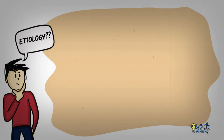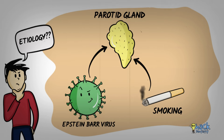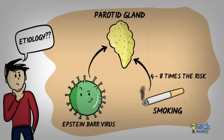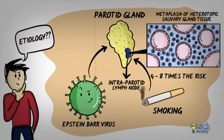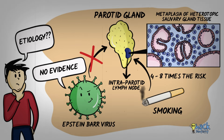Etiologic factors like smoking and Epstein-Barr virus have been reported to cause this tumour. Smokers have been estimated to have a 4 to 8 fold risk of developing Warthin's tumour. It is thought that tobacco products could cause metaplasia of the heterotopic salivary gland tissue in the lymph nodes, causing the lesion. However, there is no substantial evidence implicating Epstein-Barr virus as a causative factor.